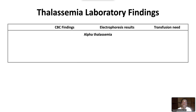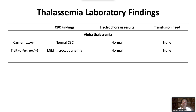In alpha thalassemia, a silent carrier has a normal or mildly decreased hemoglobin with normal or mildly decreased MCV. Hemoglobin electrophoresis is normal, and transfusion is not needed. Alpha thalassemia trait is associated with a mild microcytic anemia with a hemoglobin of about 10 grams per deciliter. The hemoglobin electrophoresis is normal in adults; in newborns, hemoglobin BARTs can be detected. In trait, transfusion is not needed.